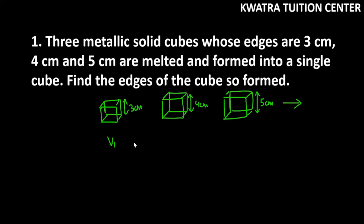That means volume of cube 1 plus volume of cube 2 plus volume of cube 3 equals volume of new cube. Let's assume that the new cube has edge as a. So this is a here.